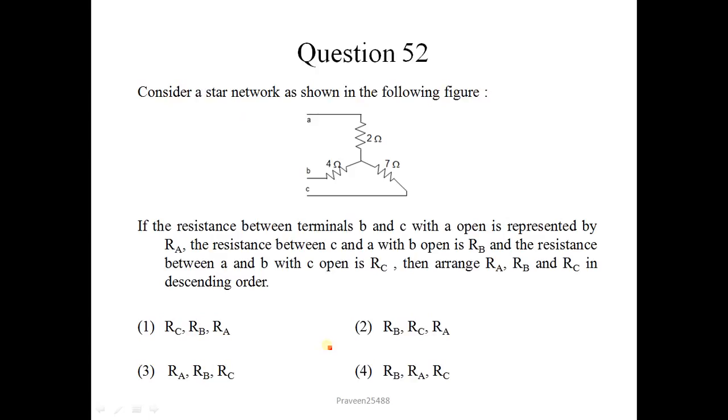Next question: consider a star network as shown in the following figure. If the resistance between terminals B and C with A open is represented by RA, the resistance between C and A with B open is RB, and the resistance between A and B with C open is RC, then arrange RA, RB and RC in descending order. As A terminal is open means there is no current flow through this resistance, so equivalent resistance between these two terminals B and C will be the sum of these two resistances because these two resistances will be in series. Between B and C it is 11. Similarly, between A and C it would be 2 plus 7 which is 9, and between A and B it will be 4 plus 2 is 6. So correct sequence is RA, RB and RC.